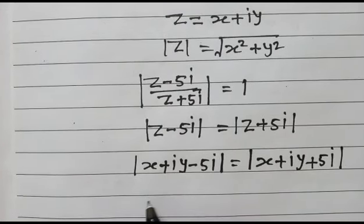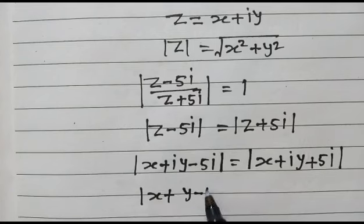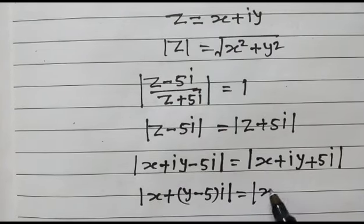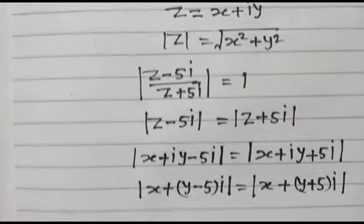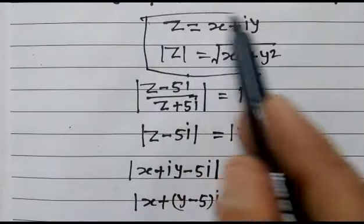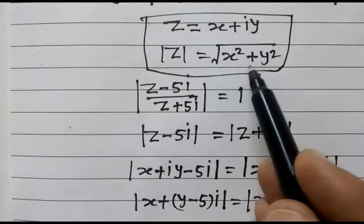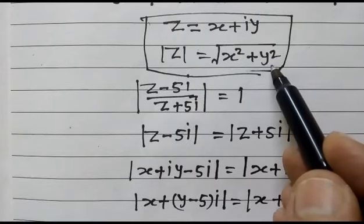Now we rearrange: modulus of (x plus (y minus 5)i) is equal to modulus of (x plus (y plus 5)i). We will use the fundamental that the modulus equals the square root of the square of the real part plus the square of the imaginary part.